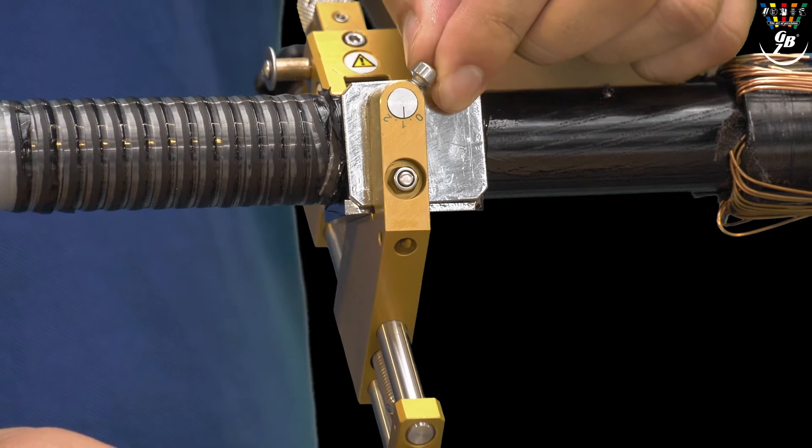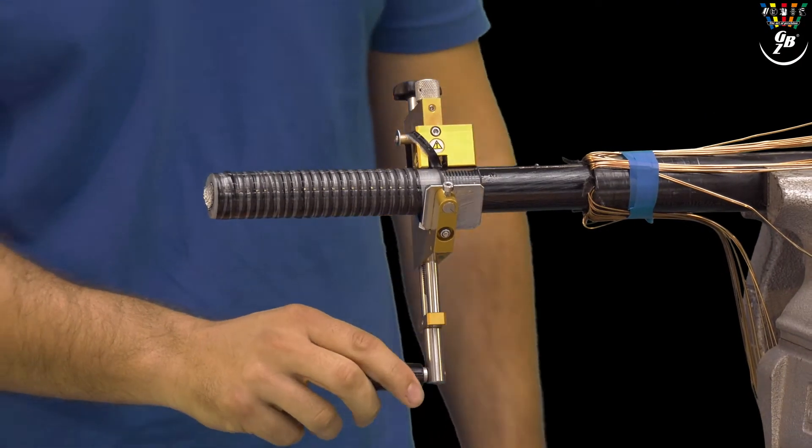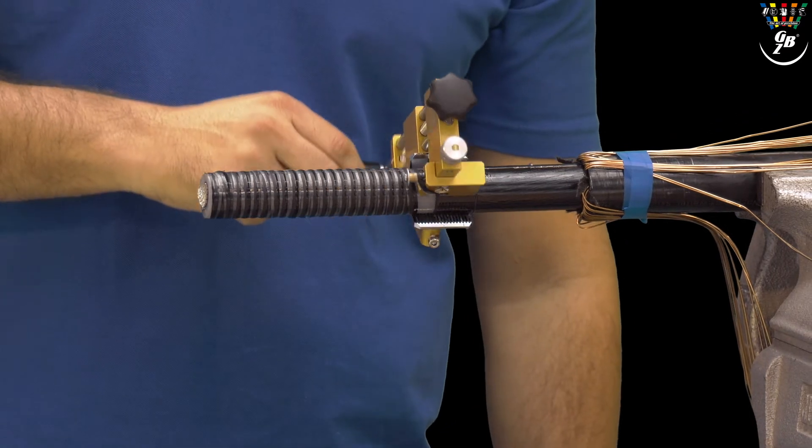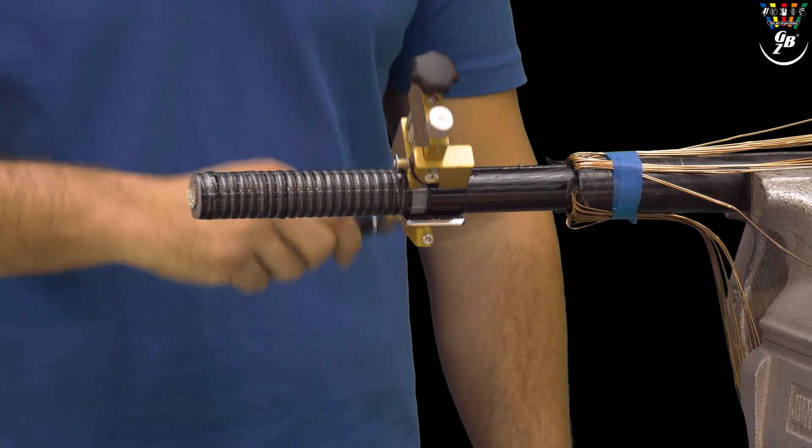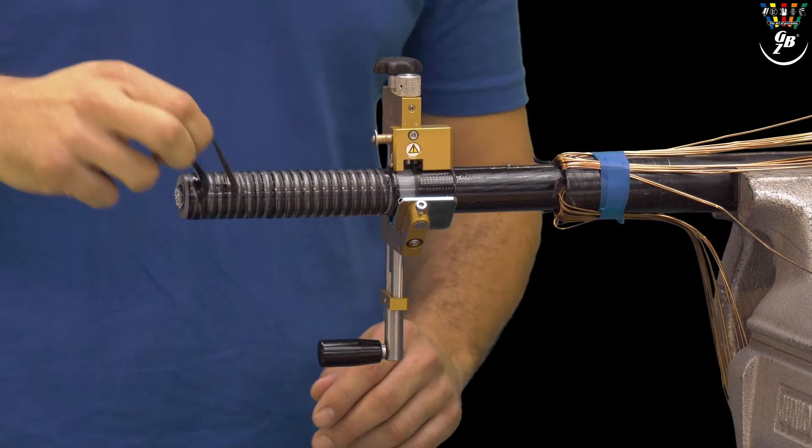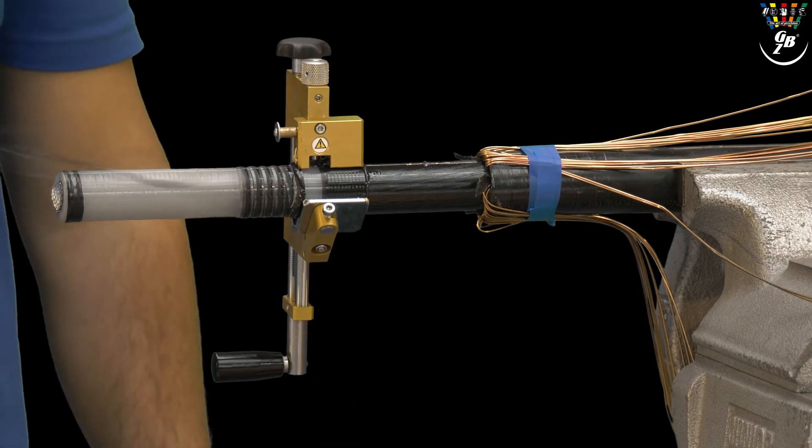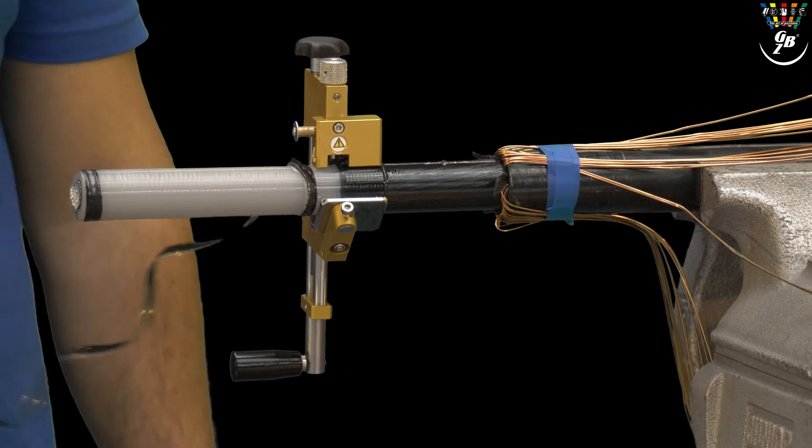When the marking is reached the feed is set to 0 and we create a round cut with 2 to 3 turns. After removing the chip we can remove the tool too.